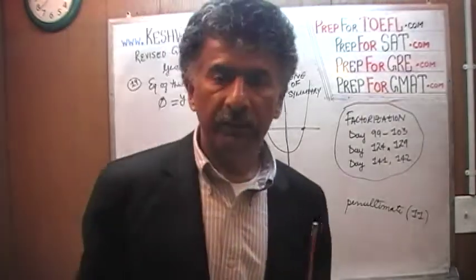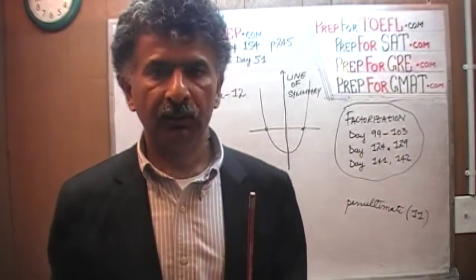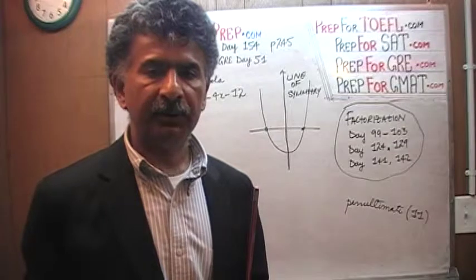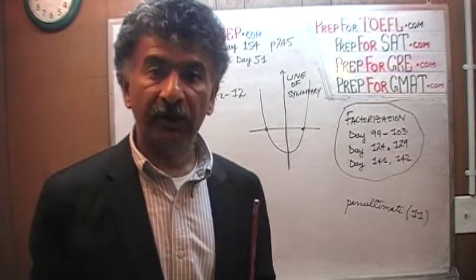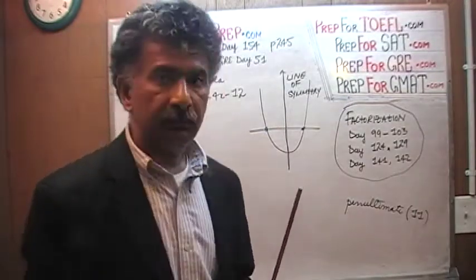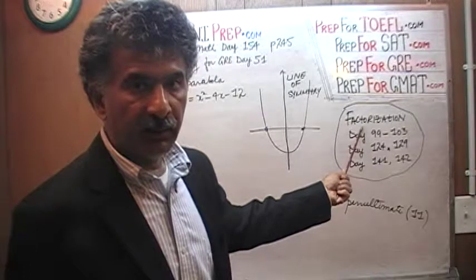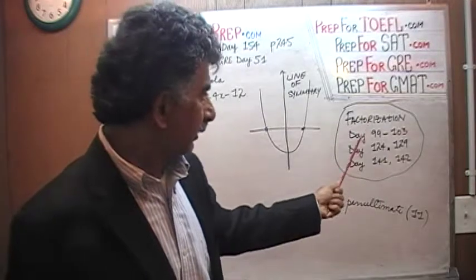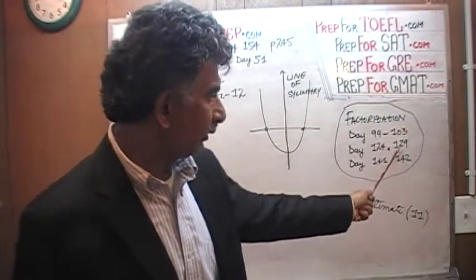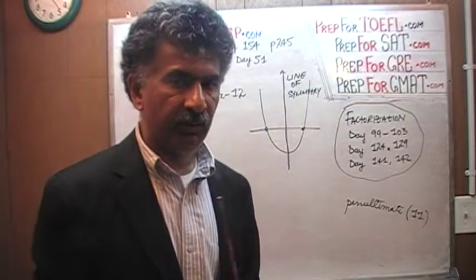There are two ways to solve a quadratic equation. One way is by using the quadratic formula. Another way is using a method called factorization. Sometimes the nature of the problem is such that you have no choice but to use factorization because they are asking something about the factors. I have already covered this topic over nine days: days 99 through 103, 124, 129, 141, and 142. We are going to spend one more day on it just now.